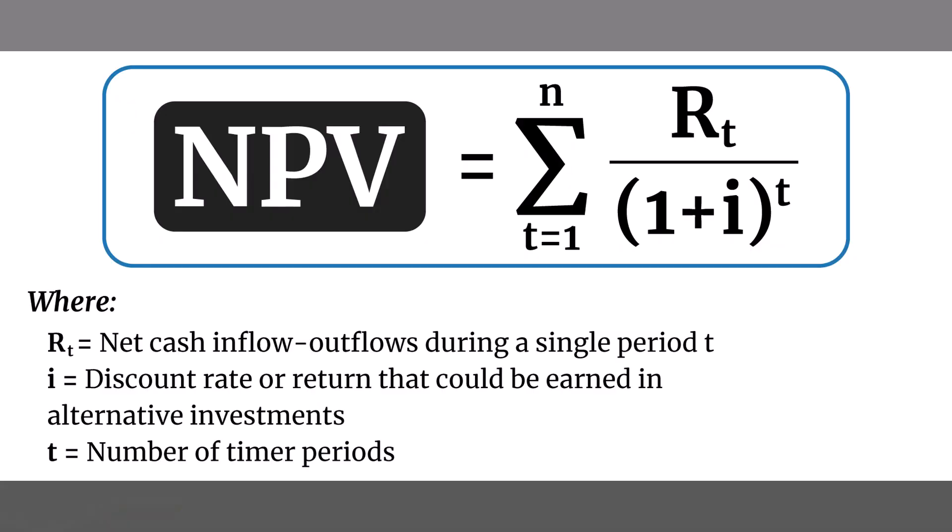One of the ways people do this is with a technique called net present value. Essentially, you're going to penalize all future payments by something called the discount rate — that's just a measure of how fast time eats away at the value of money.